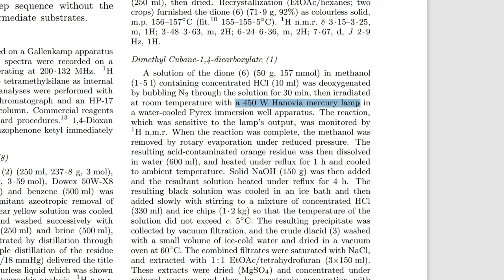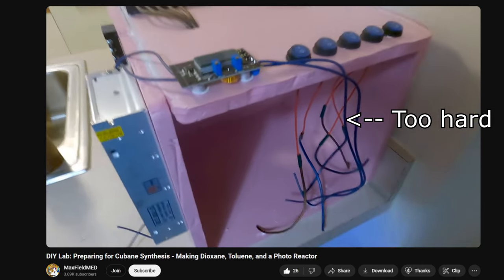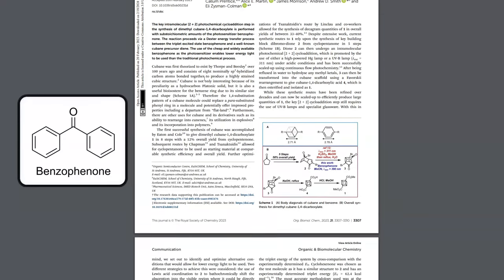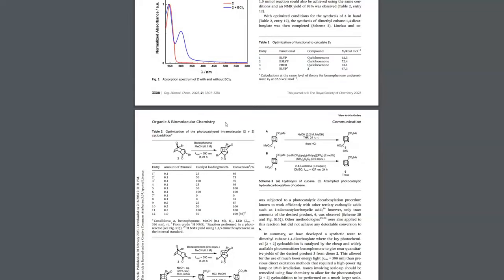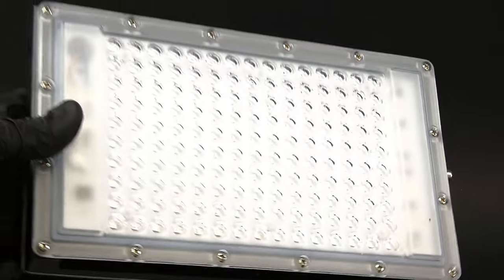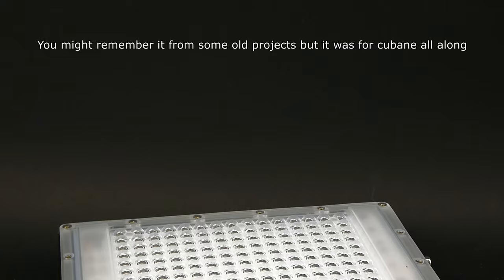Not long ago, this reaction was done with a very expensive mercury vapor lamp whose light didn't even go through glass, so you'd have to build a flow reactor using special tubing — which is way too much work. Fortunately, some very recent literature makes this step much easier using a photosensitizer, which in this case is benzophenone. It allows for a different wavelength of UV light to be used that goes through glass, and its emitters are much more accessible.